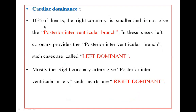Cardiac dominance: in 10% of hearts, the right coronary artery is smaller and does not give the posterior interventricular branch. In these cases, the left coronary artery provides the posterior interventricular branch — this is called a left dominant heart. Mostly the right coronary artery gives the posterior interventricular artery, and such hearts are called right dominant. Cardiac dominance depends upon the origin of the posterior interventricular artery.